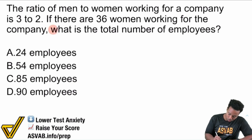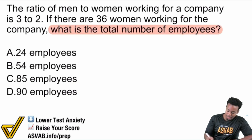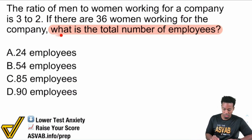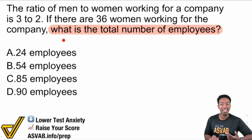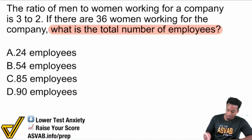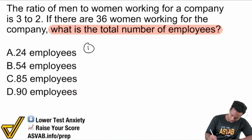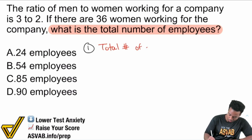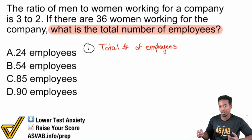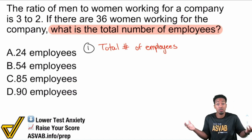Right here it says: what is the total number of employees? The 'if' part is extra information — that's the condition of the problem, not the actual question. The question is the who, what, when, where, why, how many, what's the following. So start there. What is the total number of employees? That's what we're looking for: total number of employees. We're given that there are 36 women working for the company.